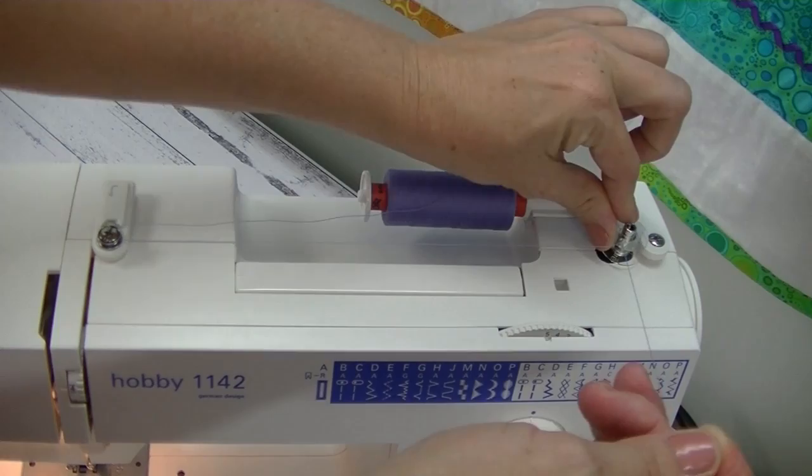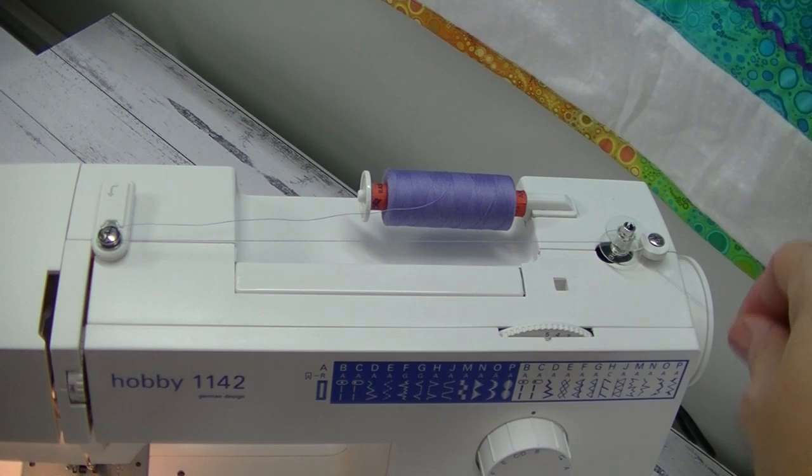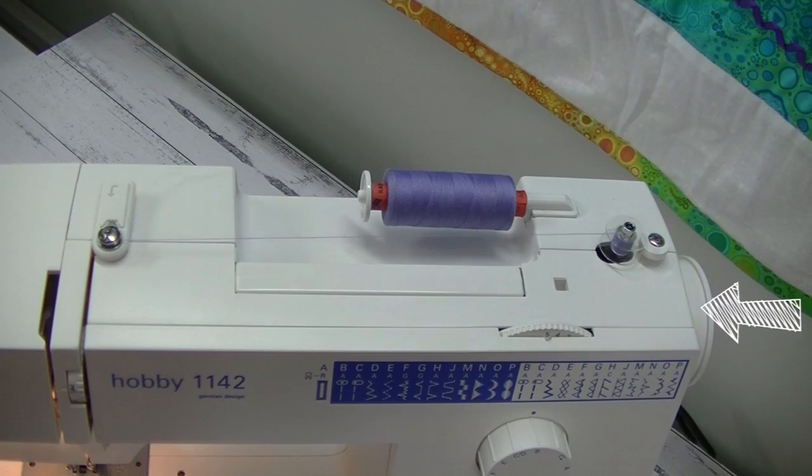Now, before we can start winding our bobbin, we need to pull the flywheel out to your right. Push down your presser foot to control the speed of the bobbin wind. Push your flywheel into the machine again, and to remove your bobbin, move the bobbin spindle to the left and up.